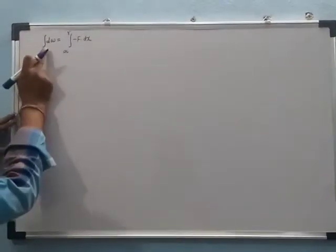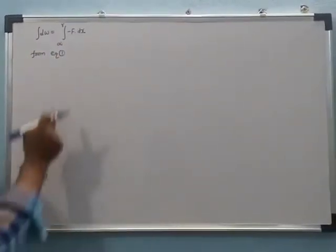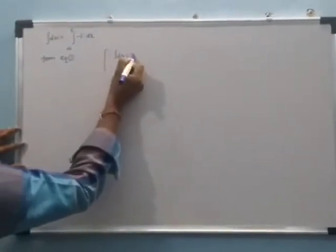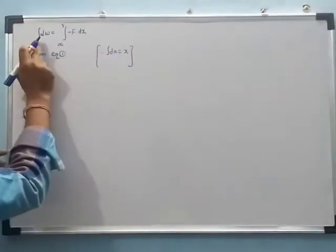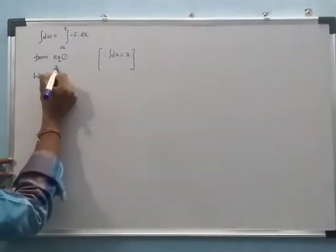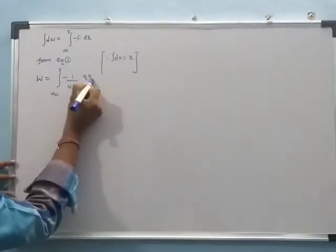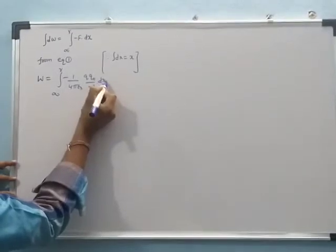The integration of dW is equal to the integration from infinity to r. The charge can be moving from infinity to r. From equation one, F is equal to 1 by 4πε₀. Now we substitute here: the integration of dW is equal to W, which equals the integration from infinity to r of minus (1/4πε₀)(qq₀/x²) dx.